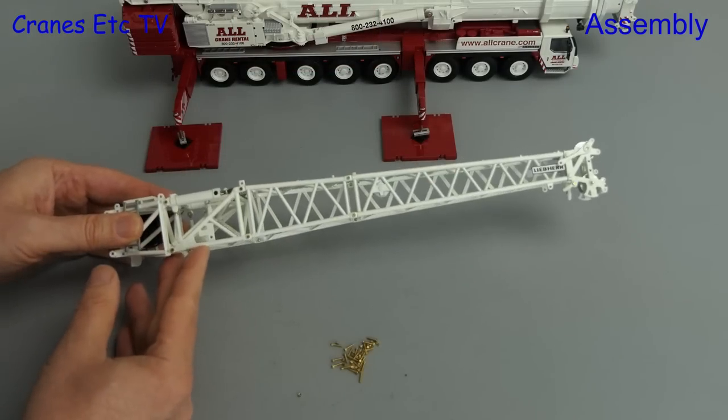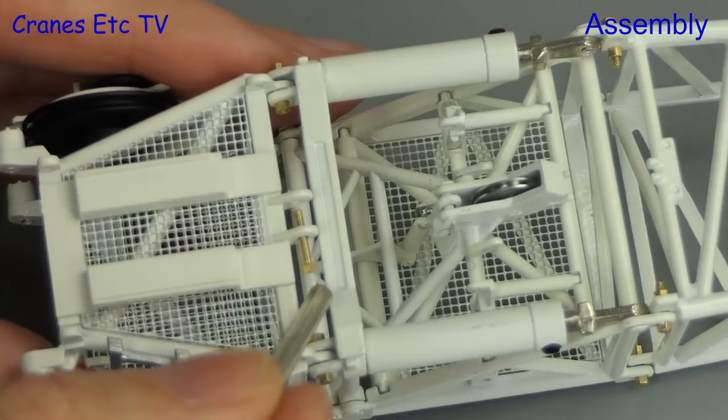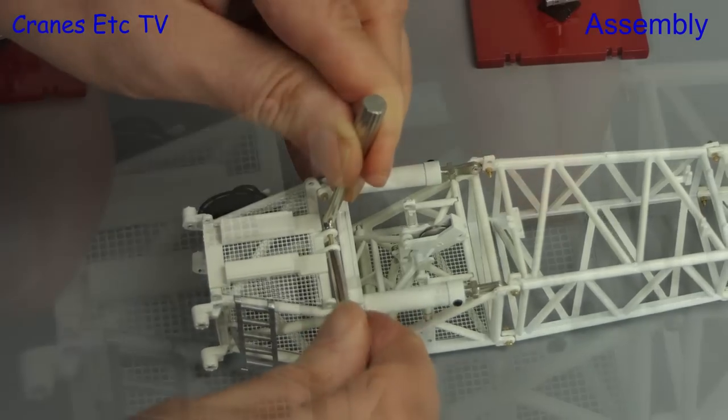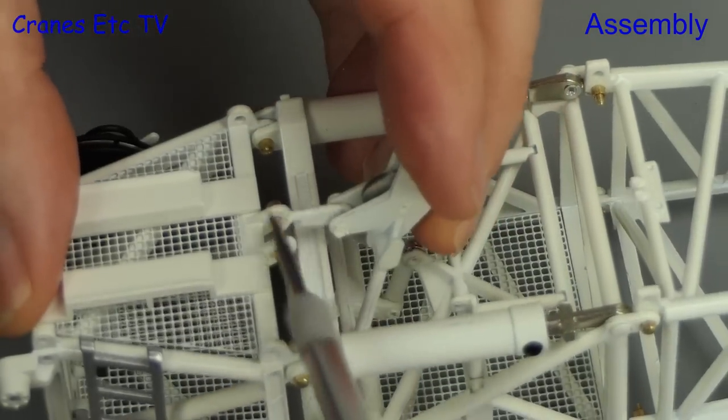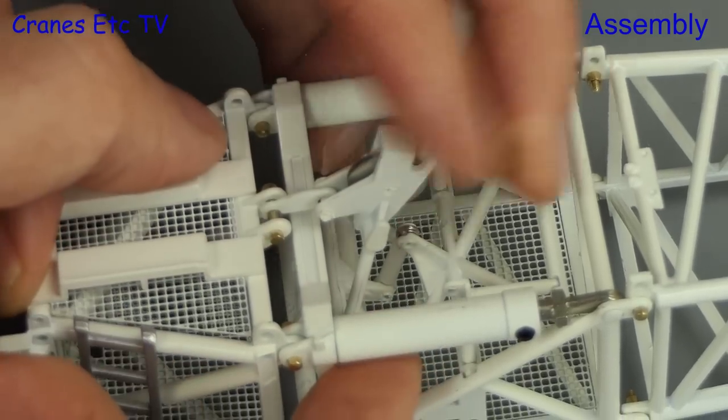And here we have the assembled fixed fly jib. One slight difference on this version is that we need to insert a long screw just where it's shown. That's because there was a rivet installed previously. And the reason you need that bolt is so you can hook on the guide wheel assembly.